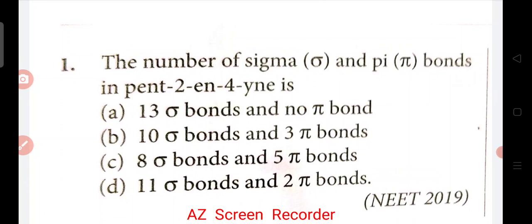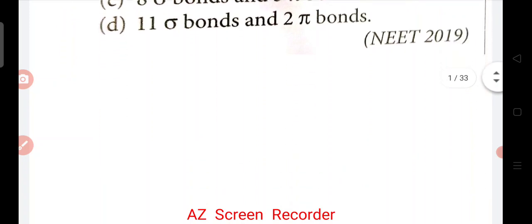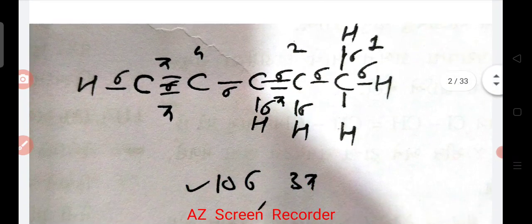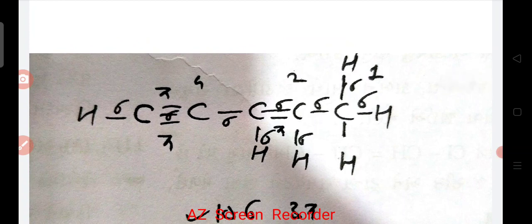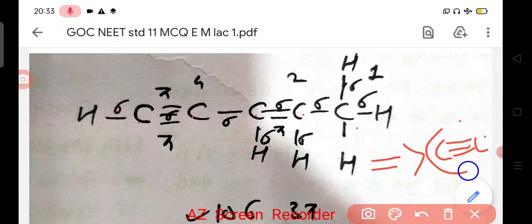How to solve these type of questions? Since the number of sigma and pi bonds in pent-2-en-4-yne is, here you can see our structure, pent-2-ene. Yes, here, pent ke type, number of carbon 5: 1, 2, 3, 4, and 5. You can see, reactivity of alkene.